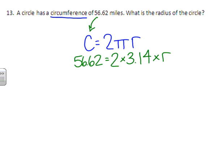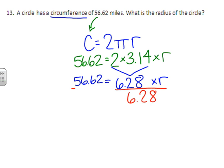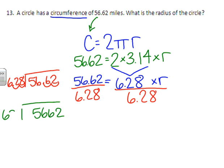This time, let's combine 2 times 3.14 first to get 6.28. So we get 6.28 times r equals 56.62. The inverse of multiplying is dividing. So we're going to divide by 6.28 on each side. And we can set that up. Just like before, we're going to move our decimal over. So we have 56.62 divided by 6.28. So we're going to move it over twice in each number. And we're going to rewrite this as 5,662 divided by 6.28.